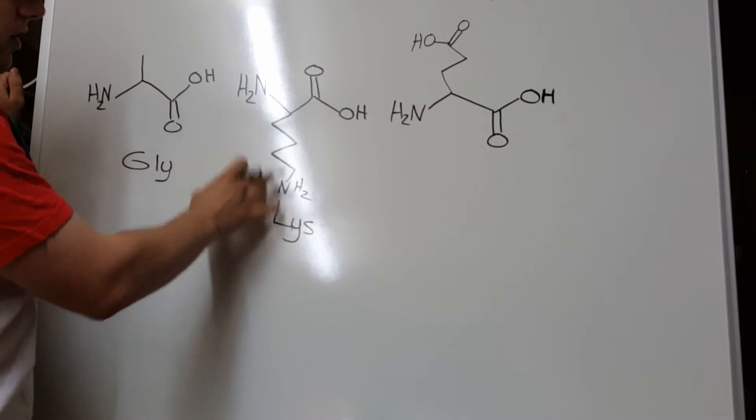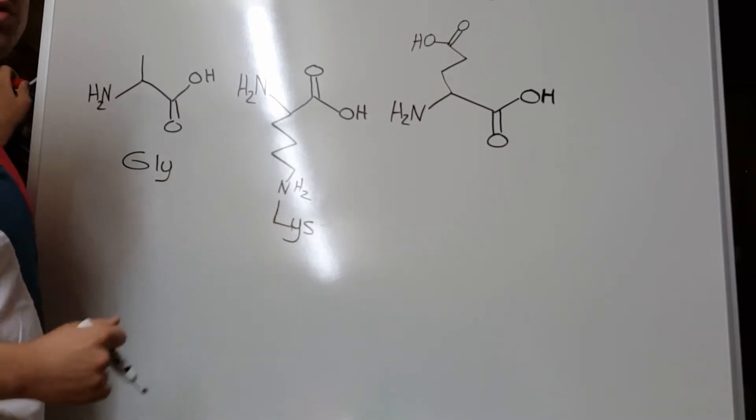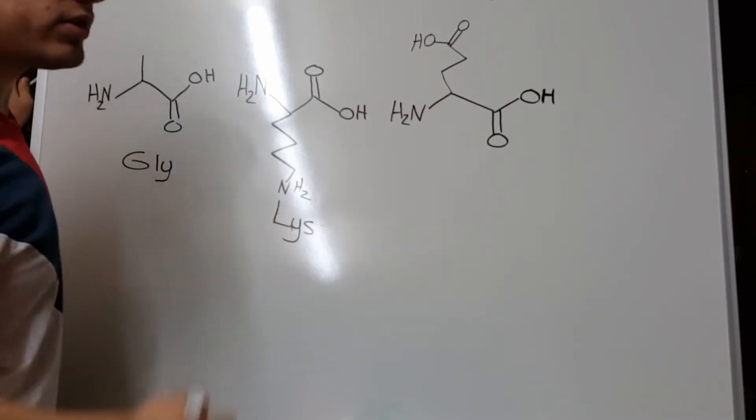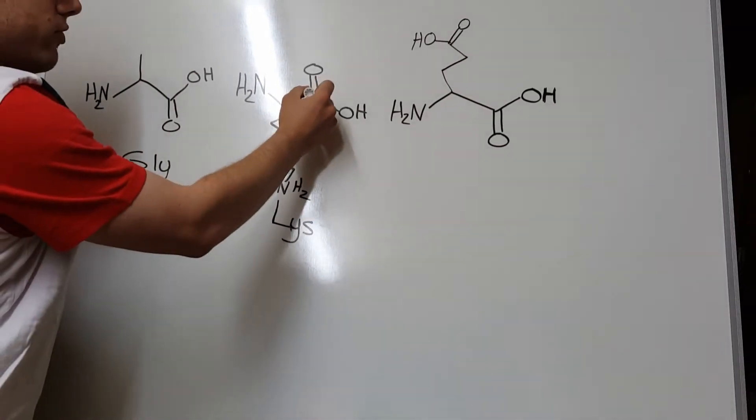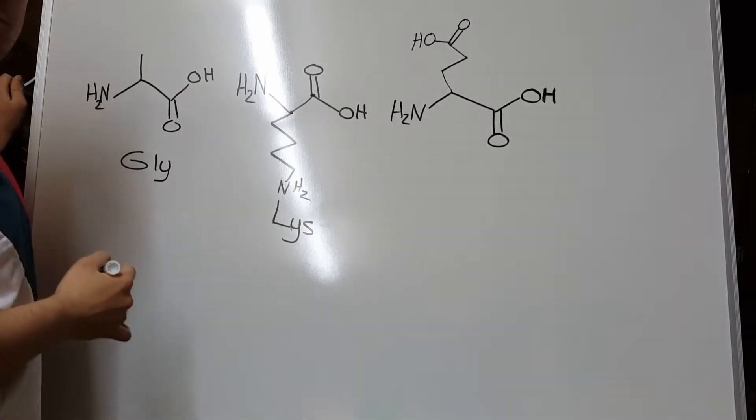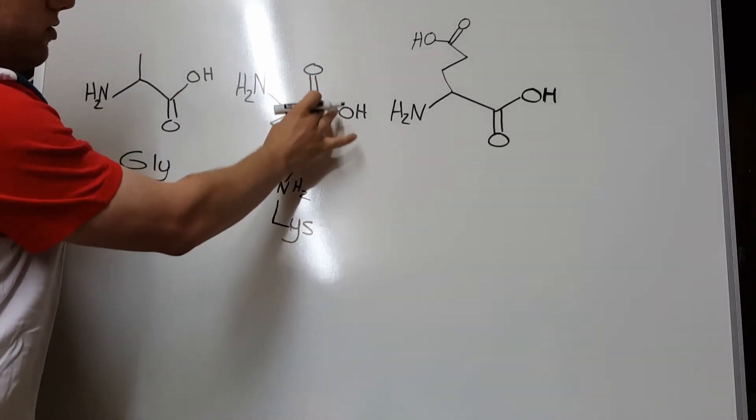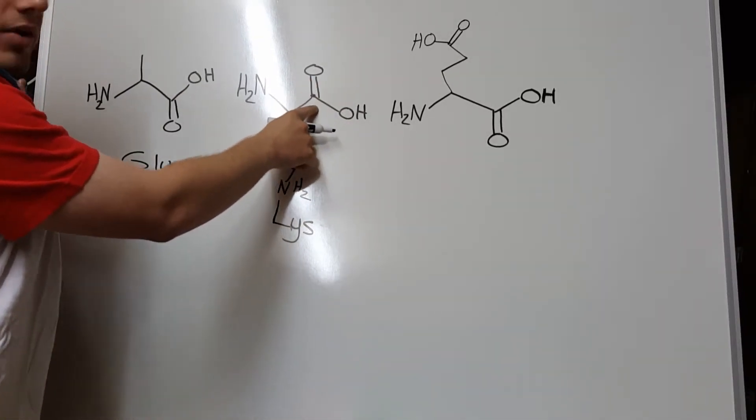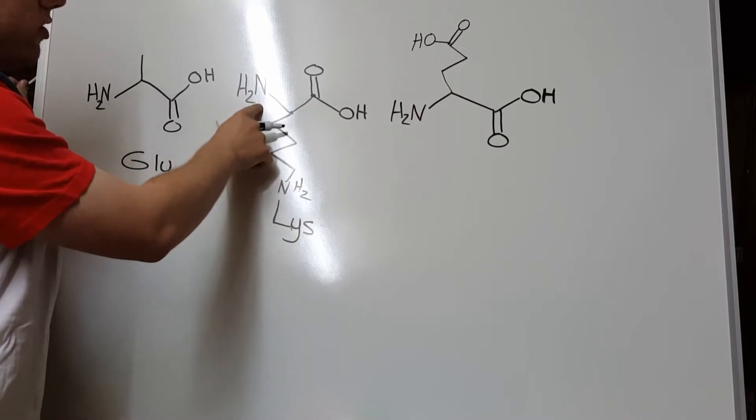Notice lysine has two amino groups, so how do we know which one we're supposed to use? Remember, the basic structure of any amino acid always involves two carbons, one with a carboxylic acid, and right next door, one with an amino group. And those are always going to be the carboxylic acid you use and the amino group you use.